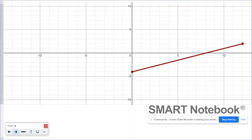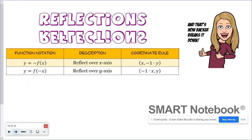Those are reflections of functions on the coordinate plane. If you see a negative in the function, it indicates a reflection. If it's out in front, that's a reflection over the x-axis and all your y values change signs. If you see a negative inside the function in front of the x, that's a reflection over the y-axis and all your x values will change signs. And that's how Backer breaks it down.